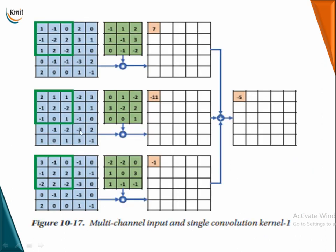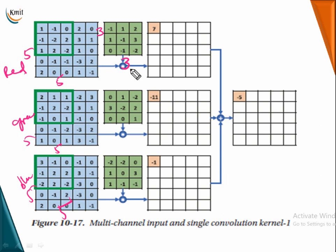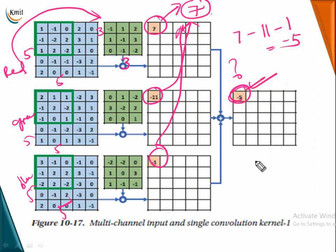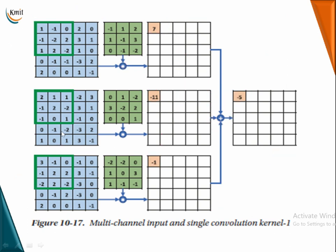Looking at the pictorial representation: we have a 5 by 5 red channel, a 5 by 5 green channel, and a 5 by 5 blue channel, and we apply a single 3 by 3 kernel. Through the red channel the first element came as 7, through the green channel it came as minus 11, and through the blue channel it came as minus 1. Adding them: 7 plus (minus 11) plus (minus 1) equals minus 5. So minus 5 is your resultant feature map element for multi-channel input with a single convolution kernel.